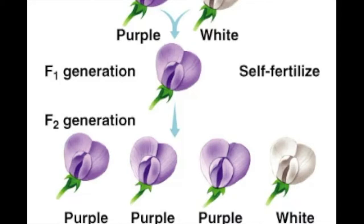Although you have two hereditary factors for each trait, each parent can only pass on one of these factors to the offspring. When the sex cells or gametes form, hereditary factors must separate, so there is only one factor per gamete. In other words, the factors are segregated into gametes. Mendel's Law of Segregation states that two hereditary factors separate when gametes are formed.